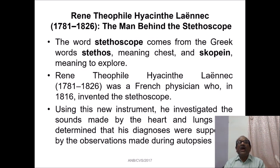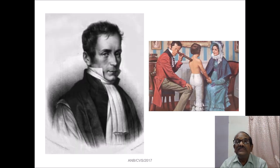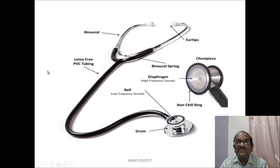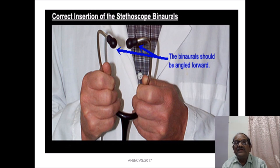Heart sounds can be heard with a stethoscope. The stethoscope was invented by René-Théophile-Hyacinthe Laënnec, whose lifespan was approximately 1781 to 1826 — he is the man behind the stethoscope. This figure shows the original type of stethoscope used in practice, and the modern modified stethoscope used today. The parts of the stethoscope are well known. It is also important to know how to correctly insert the stethoscope binaural earpieces into the ears — the ear tips should be angled forward.